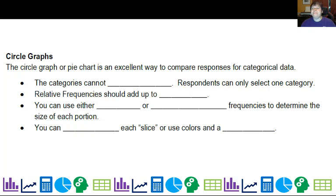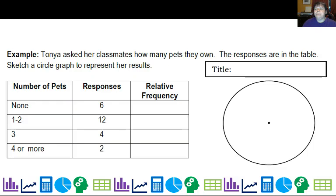The circle graph or pie chart is a great way to compare responses for categorical data. The categories cannot overlap in that case. Relative frequencies need to add up to 100 percent, and you can use either actual or relative frequencies. You can label each slice or use colors and a legend, whichever works, but people need to know what each section on your graph represents.